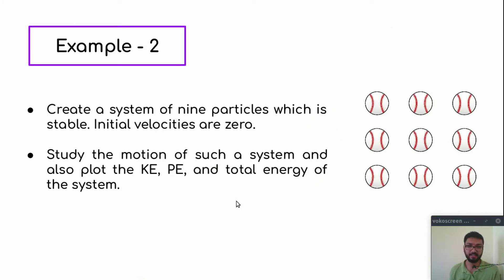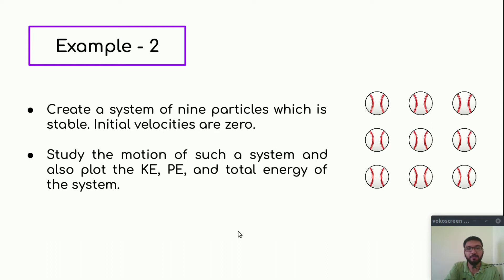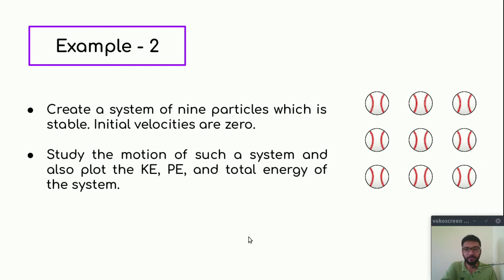Now let's discuss a tougher example. In this problem, we want to create a stable system of nine particles. The initial velocities are zero, meaning the system doesn't have any kinetic energy initially. We want to study the kinetic energy, potential energy, and total energy of this system. Will they just stick to each other, or just fly away? Let's find the answer.